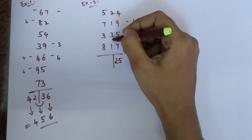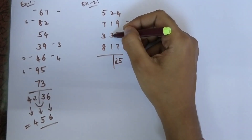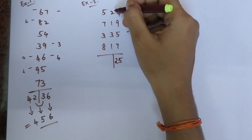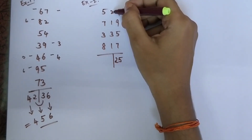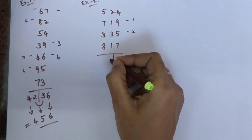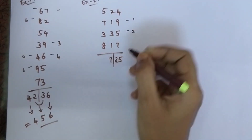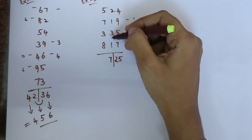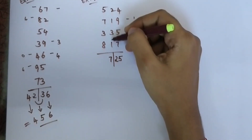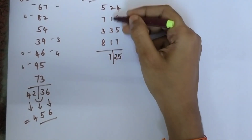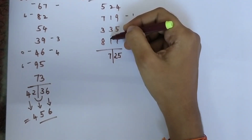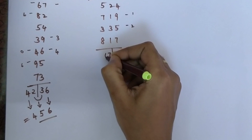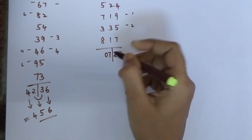Now I am going to add all the middle numbers. 3 plus 1 is 4, 4 plus 1 is 5, 5 plus 2 is 7. There are no bars when adding these single-digit numbers, so I write 0 here — giving 07.